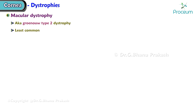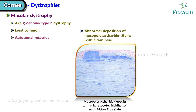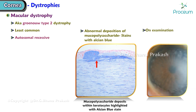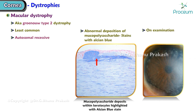Macular dystrophy, also known as Groenouw type 2 dystrophy, is the least common dystrophy and the only autosomal recessive dystrophy. It is characterized by abnormal deposition of mucopolysaccharide and stains with Alcian blue. On examination it shows grayish-white opacities with clouded stroma.